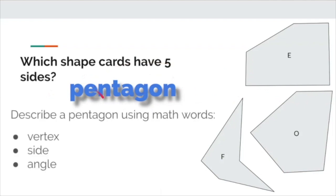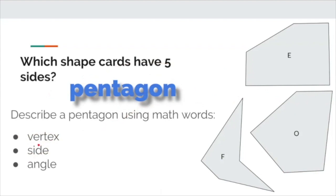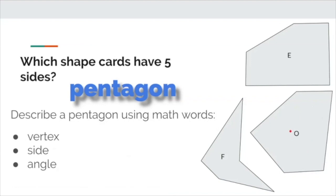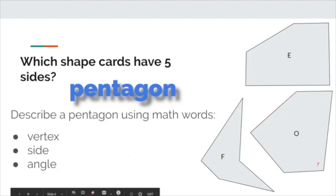Now I want you to describe a pentagon using the math words we just discussed. Can you talk about the vertex, the angle, and the side? Talk to the computer or turn to someone next to you — even if it's your dog or pet cat — and explain what one of the pentagons might look like using vertex, side, and angle. If you said that a pentagon has five vertices and five sides, you are correct because they have five corners. You can also say that there are five angles to a pentagon.